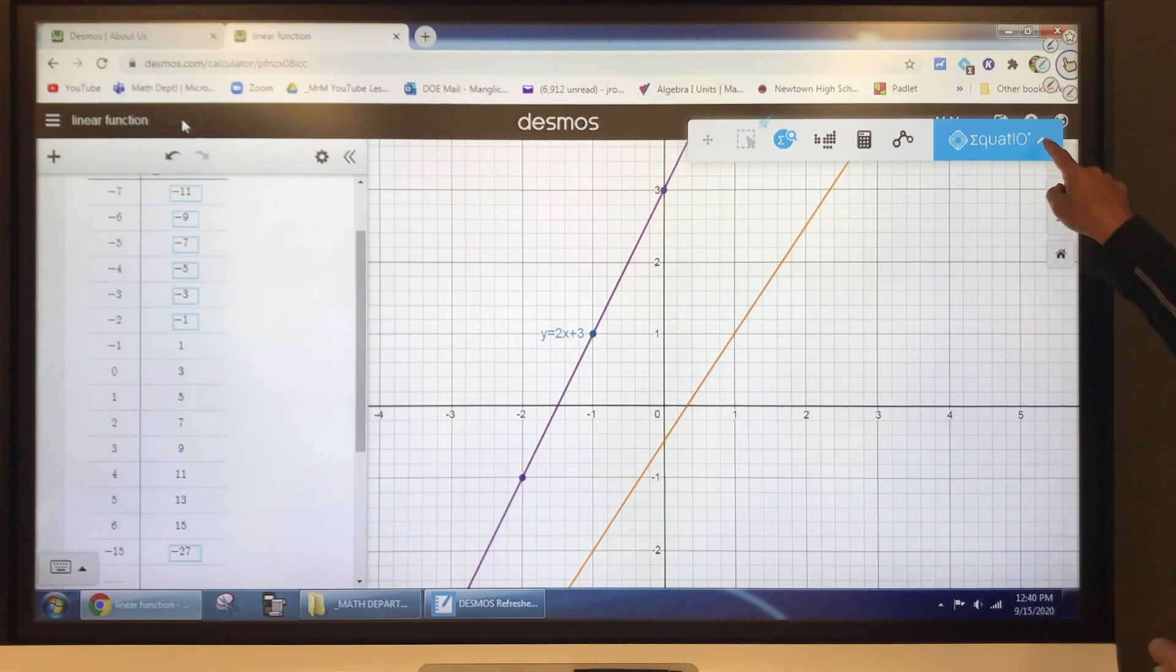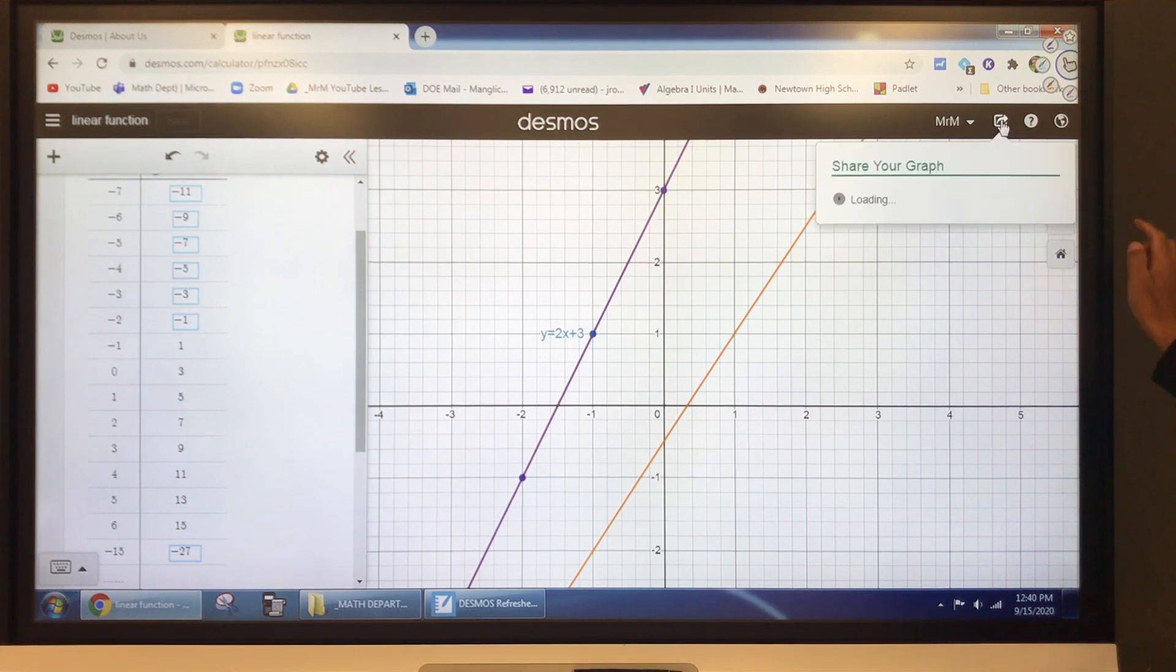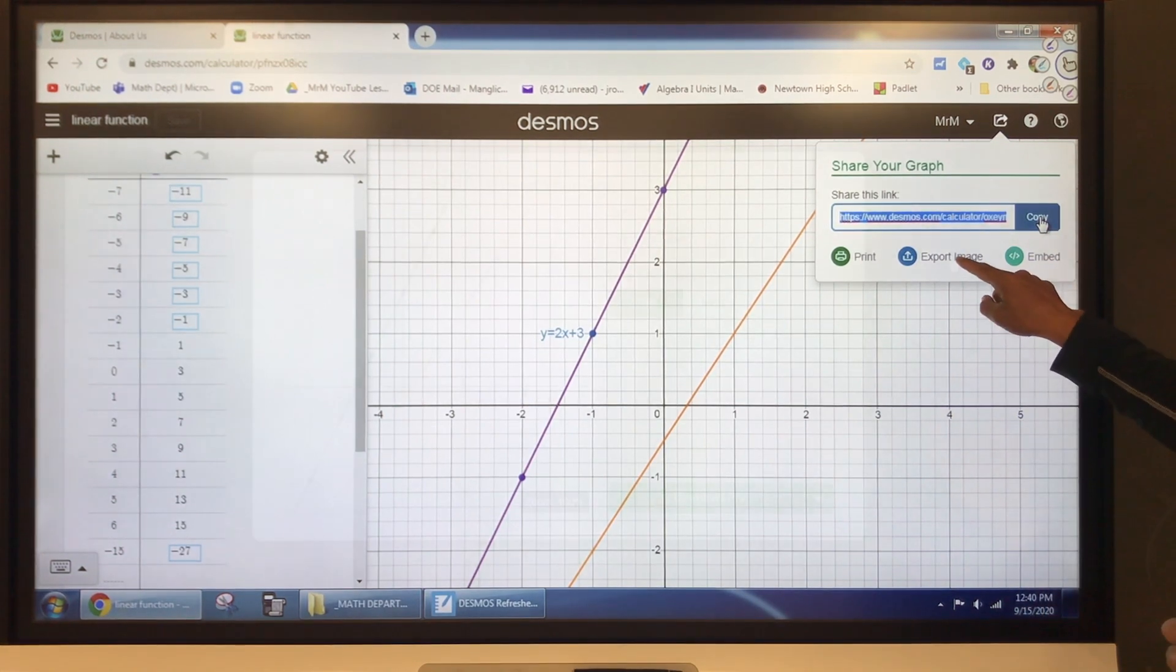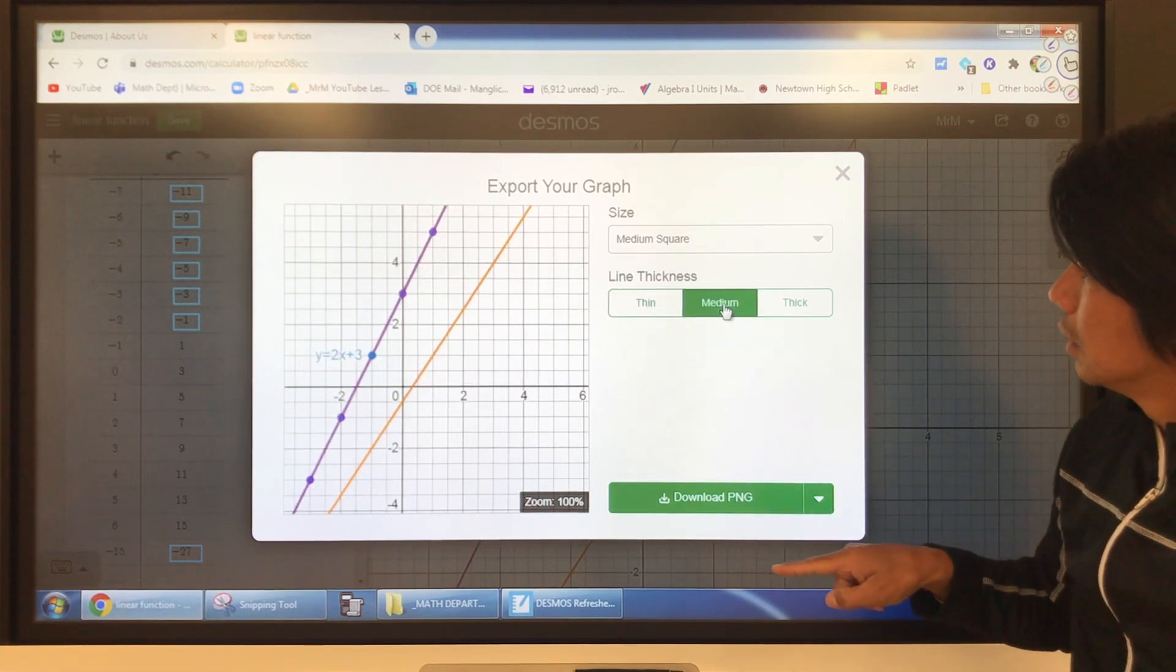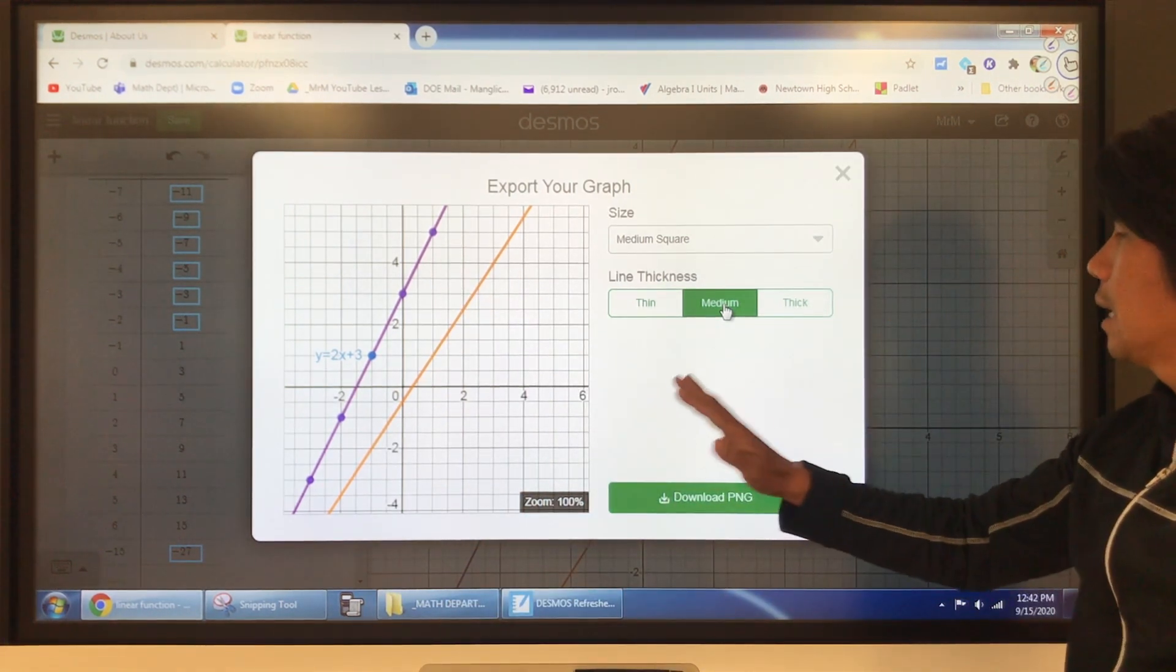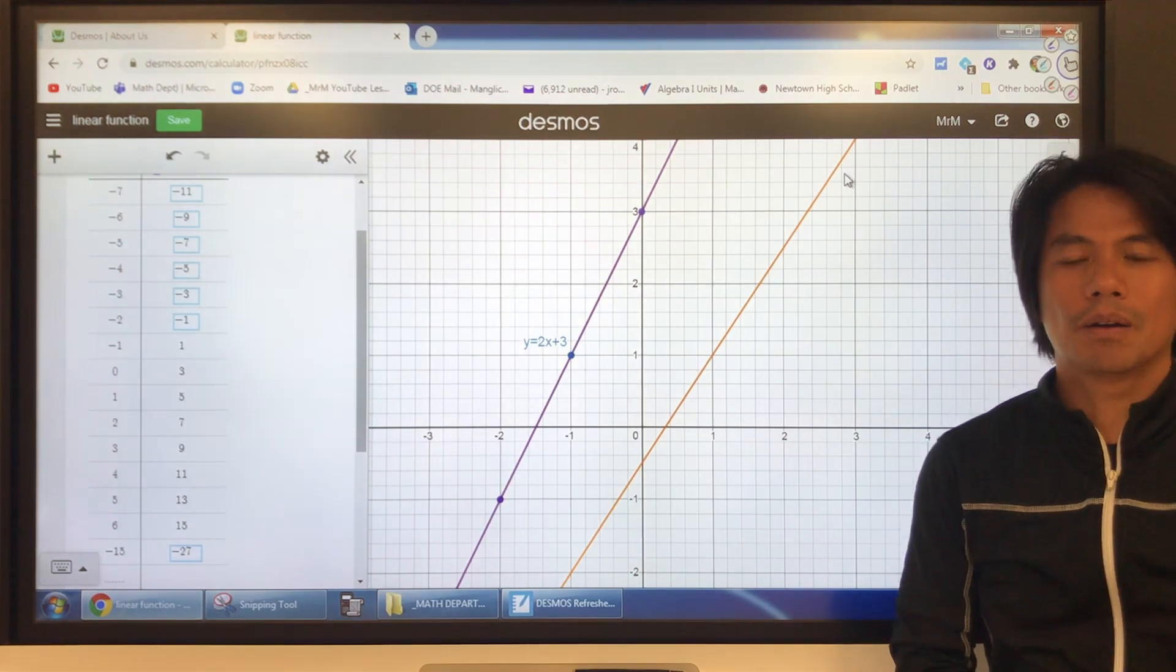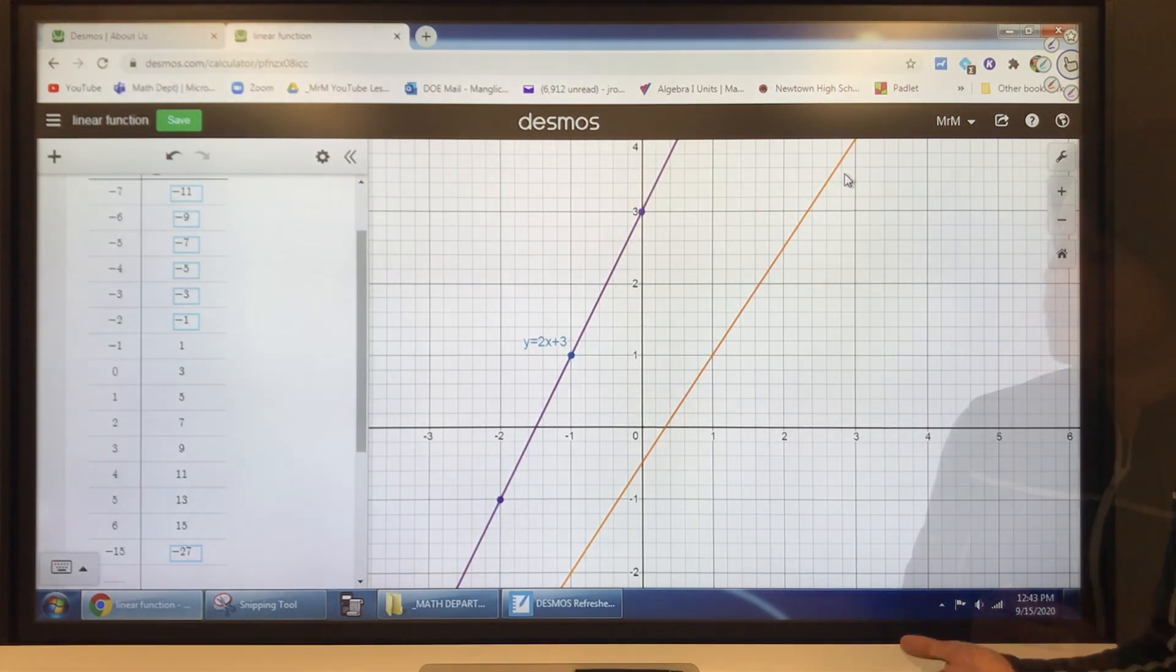And then, how do you share it? Click this button. You see there's a box and an arrow. You can copy the link and share it to your Google Classroom. Now, how about the image? You have the options from thin, medium or thick. Let's see. Medium, notice that the lines are thicker, and the axis, x and y axis, are thicker. Okay, that's how you share it. You can share it to your teacher, or if you're a teacher, you can share it to your students, or you can use it on your worksheet.